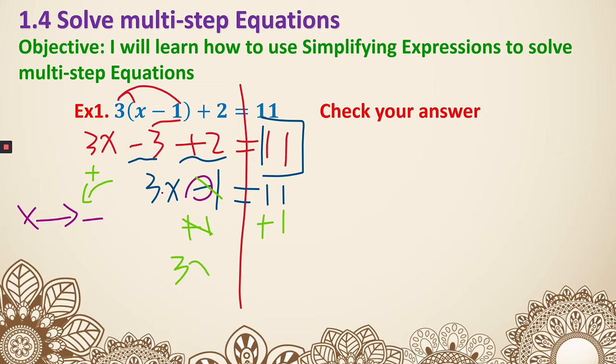They cancel. I have 3x equals 12. And then I need to get rid of this multiplication. So I divide. Divide both sides by the 3. I can get x equals 4.